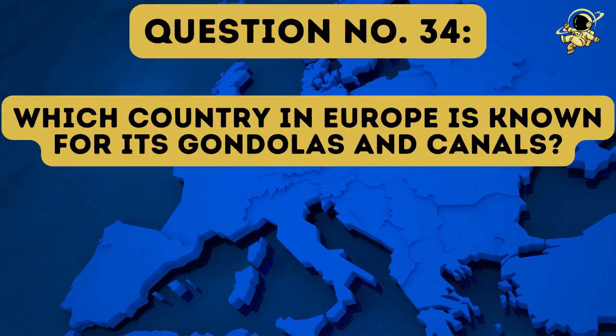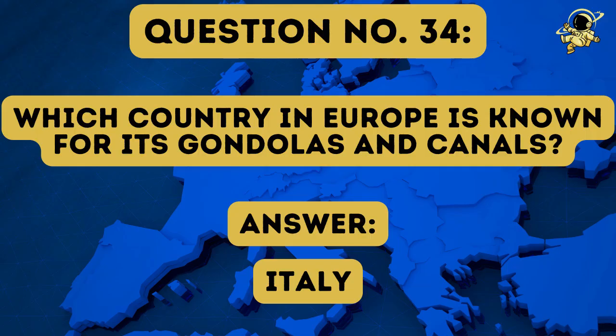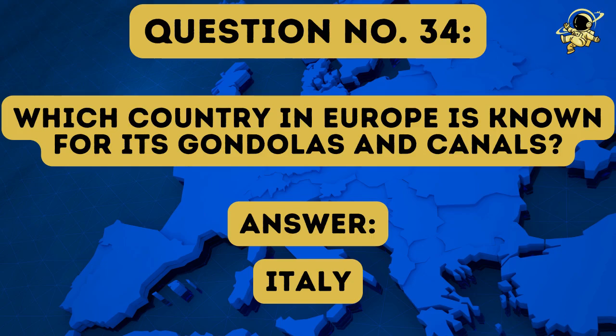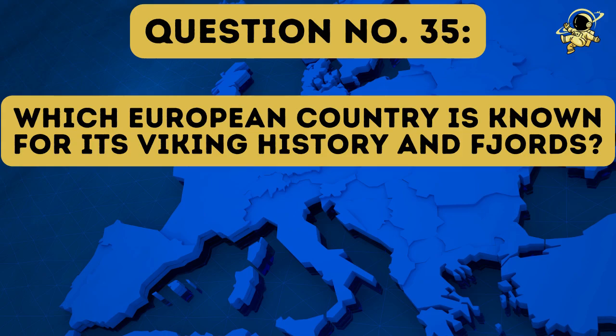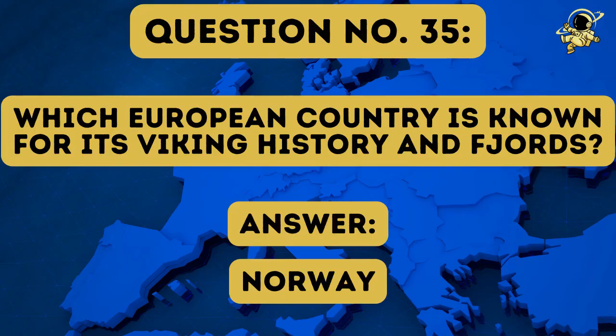Question number thirty-four: Which country in Europe is known for its gondolas and canals? And the answer to question number thirty-four is of course Italy — as a side note, especially of course you will all know Venice. Question number thirty-five: Which European country is known for its Viking history and fjords? And the answer to question number thirty-five is of course also Norway.